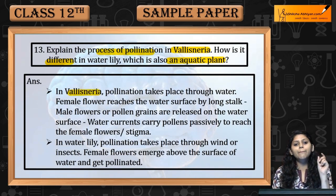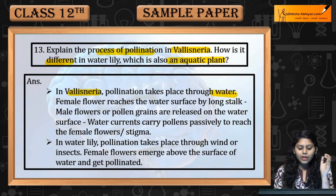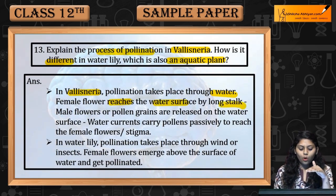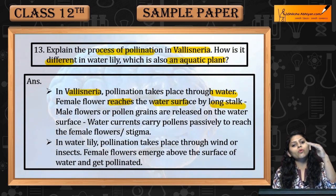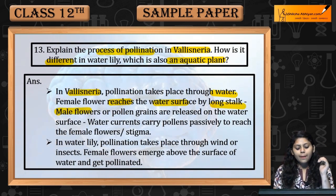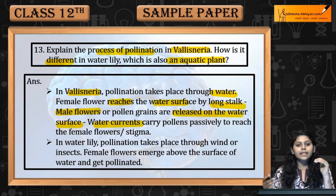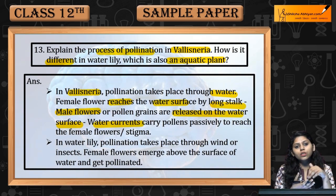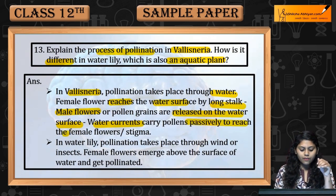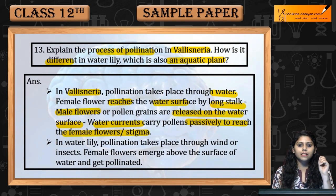In Vallisneria, pollination takes place through water. The female flower reaches the water surface by a long stalk. The pollen grains of male flowers are released on the water surface, and water currents carry the pollen to the female flower, where they passively reach the stigma.